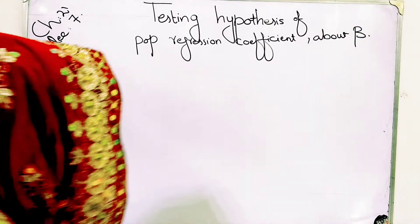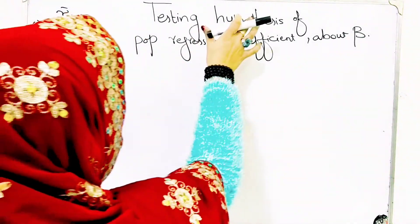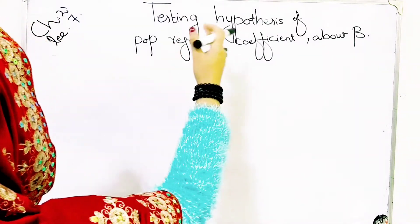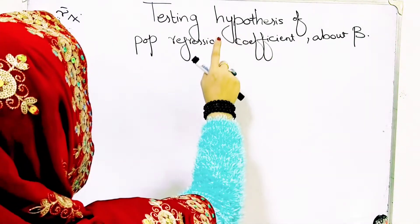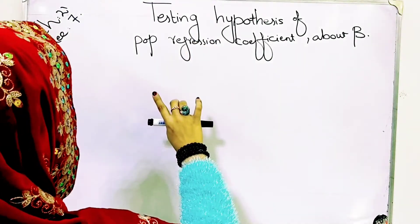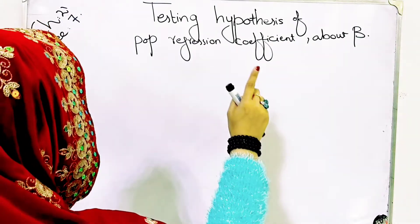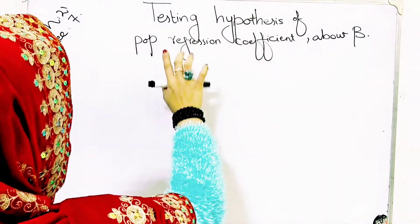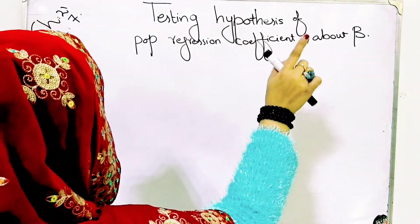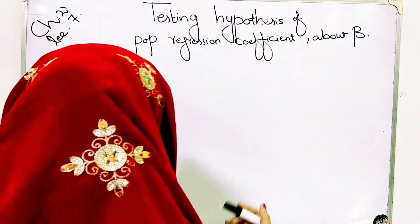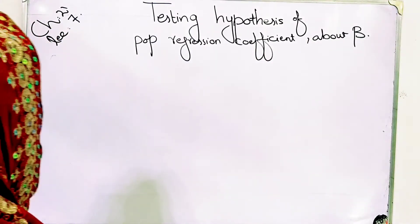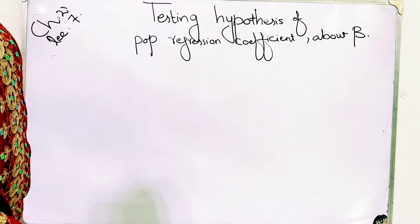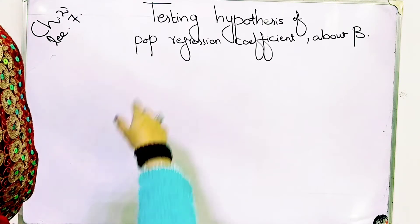Bismillahir Rahmanir Rahim. Student lecture number 7: testing hypothesis about the beta of population regression coefficient. We are discussing testing hypothesis of regression and correlation, including confidence intervals for estimates of alpha, beta, and the true value of y. We will use the t-distribution, z-distribution, and f-distribution in this context.